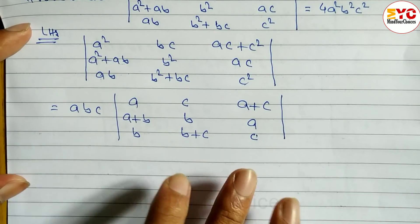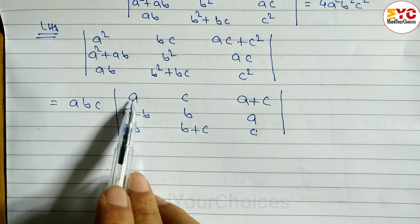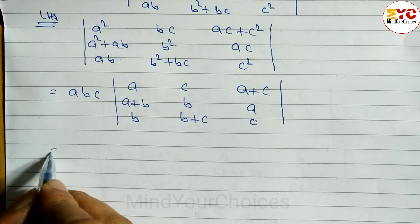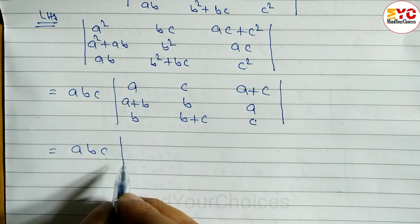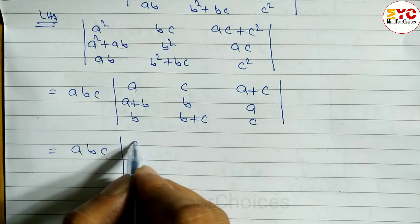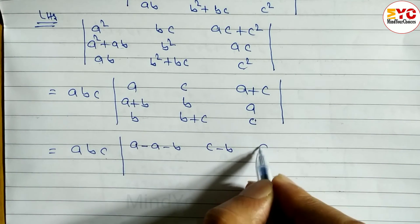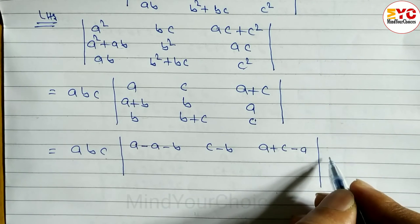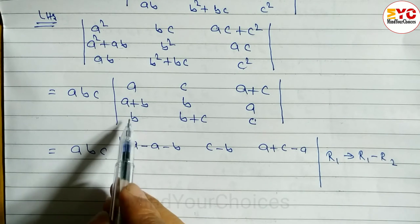Our second aim is to make any two elements zero. We cannot get zero by subtracting columns directly, so we apply row operations. We apply R1 → R1 − R2. Subtracting row 2 from row 1: a minus a gives 0 in one position, b minus b cancels, and we get c minus b in another position.